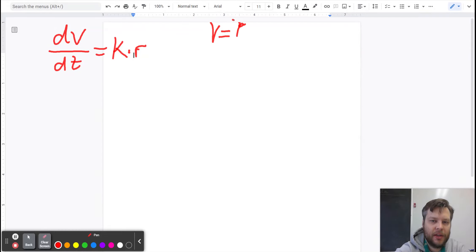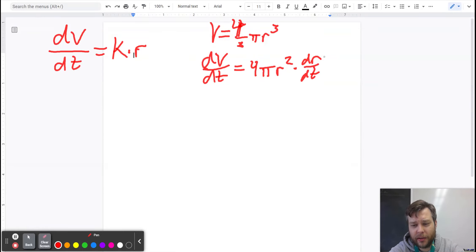The volume of our spherical souffle is four-thirds pi r cubed, because that's the volume of a sphere. And so, if we take the derivative dV/dt, we get four pi r squared times dr/dt. So it's like a related rates problem from like two chapters ago.